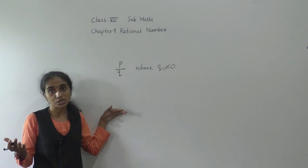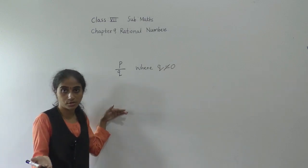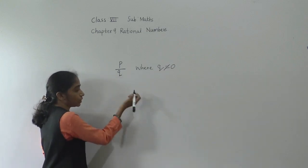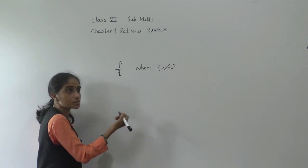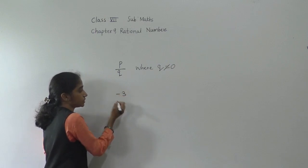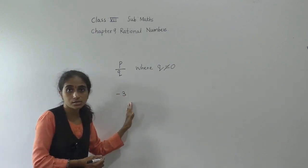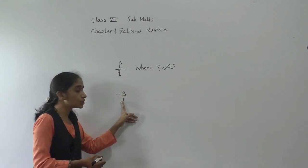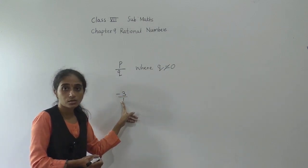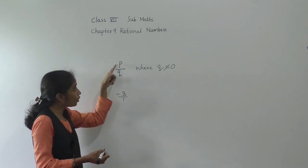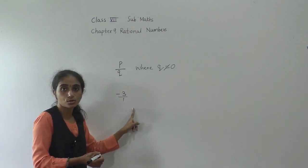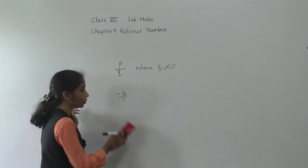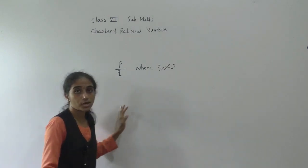Now positive and negative rational numbers you are going to learn in this lesson. Suppose from integers I take a negative integer, minus 3. Minus 3 — if there is no denominator it means the denominator is 1. So this is also written in the form of P upon Q where Q is not equal to 0. So this is a negative rational number.